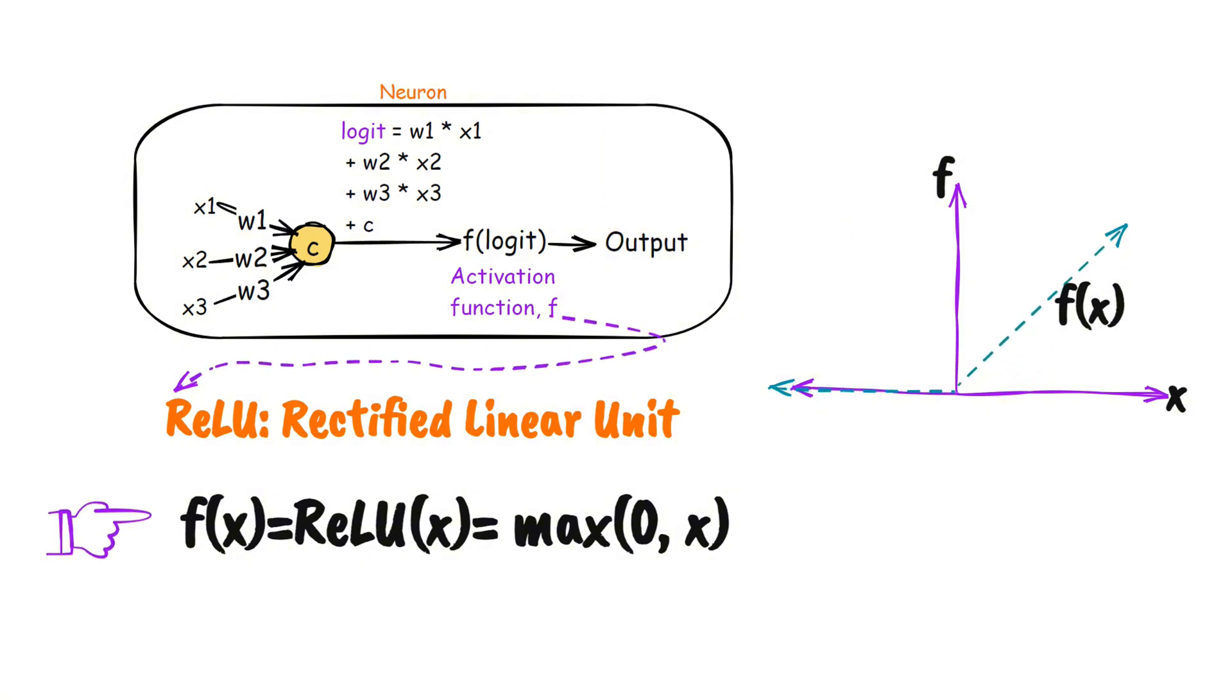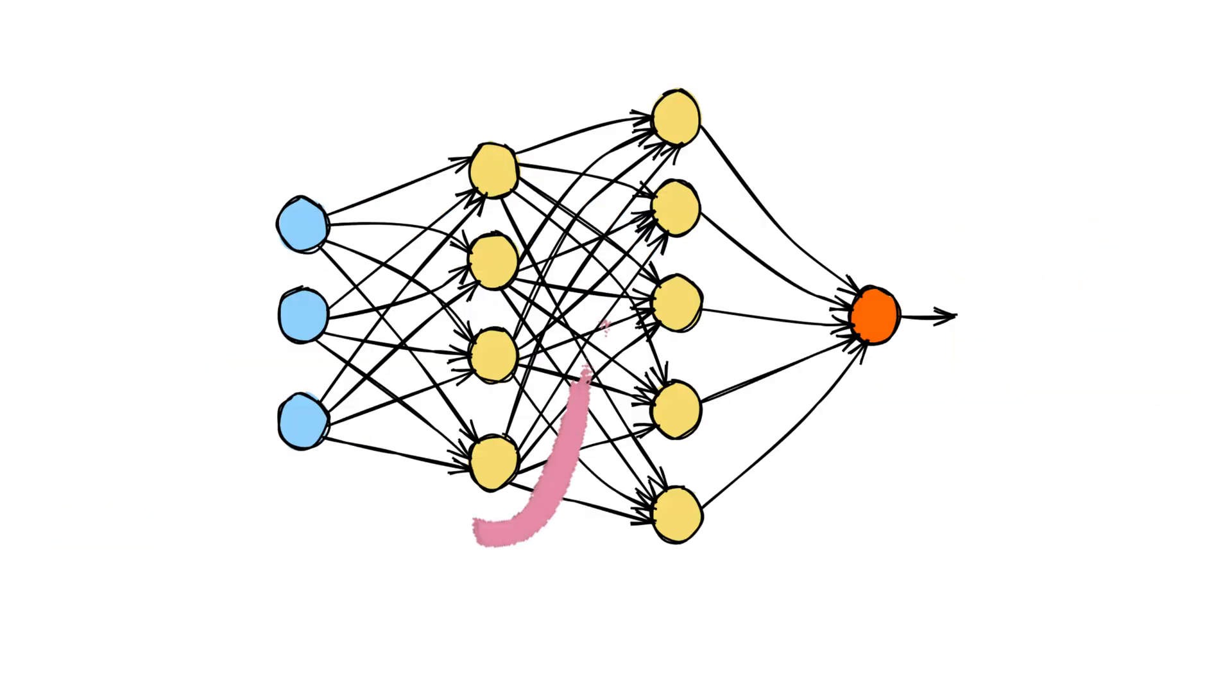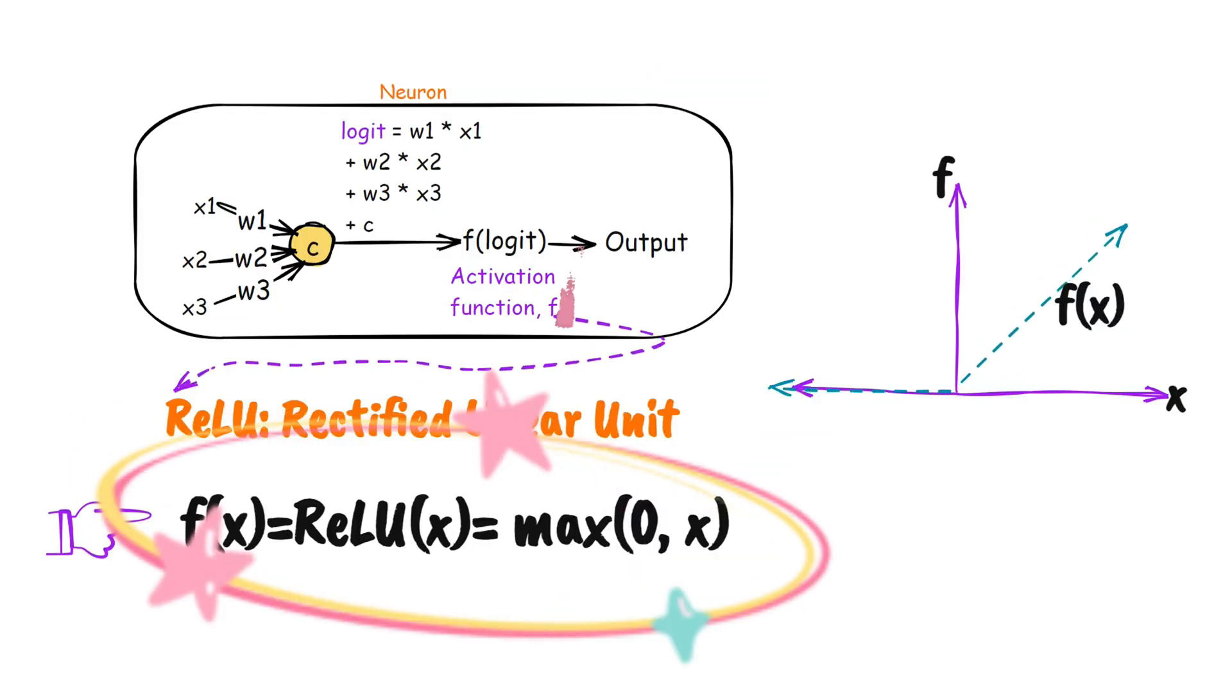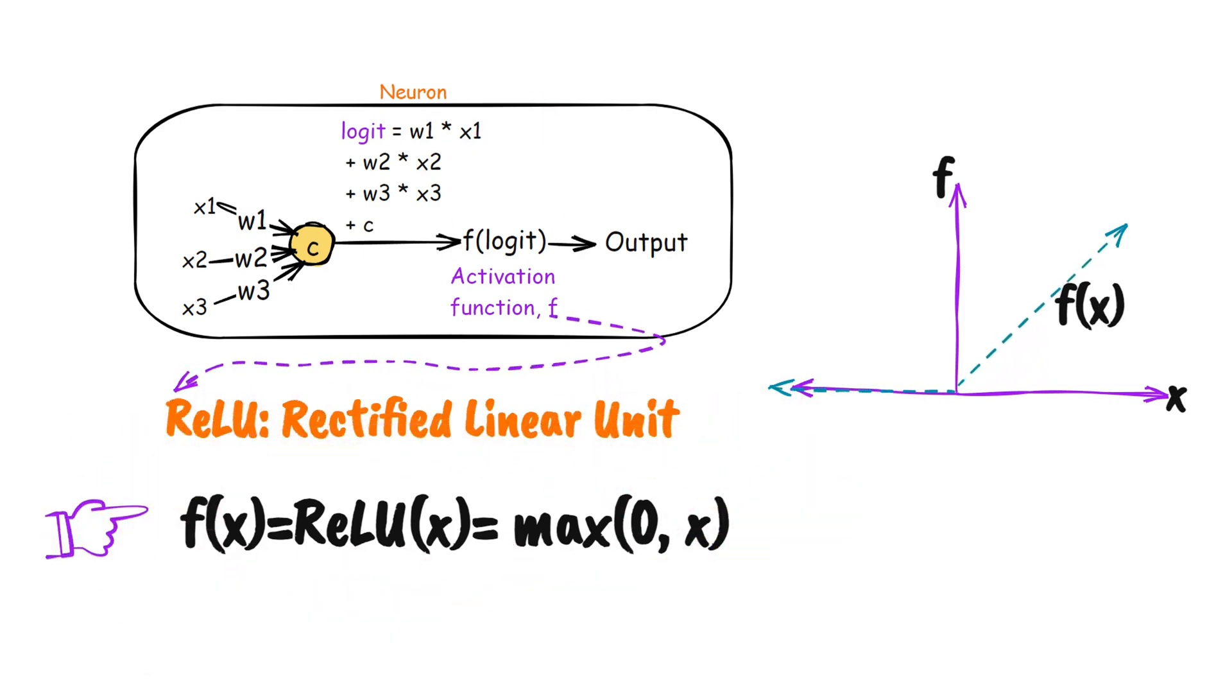The main advantage of ReLU is that it is very simple, and computationally, it does not involve too many operations. Hidden layers in most modern deep learning neural network architectures use the ReLU activation function. That is, the logits or the raw outputs of the neurons of any hidden layer passes through a ReLU function.